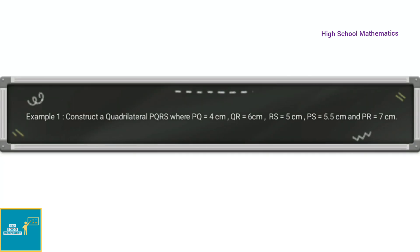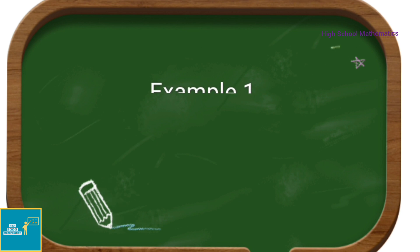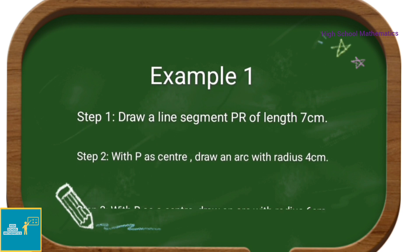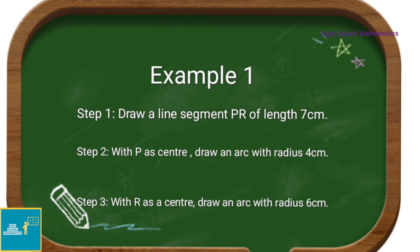See example 1: construct a quadrilateral PQRS where PQ equals 4 cm, QR equals 6 cm, RS equals 5 cm, PS equals 5.5 cm, and PR equals 7 cm. Let us see the construction steps. Step 1: draw a line segment PR of length 7 cm.